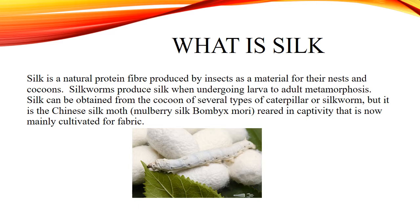Silk can be obtained from the cocoon of several types of caterpillar or silkworm, but it is the Chinese silk moth, mulberry silk Bombyx mori, reared in captivity that is now mainly cultivated for fabric.